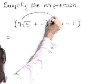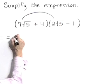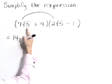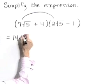7 root 5 times 2 root 5 is 7 times 2, or 14, times the square root of 5 times the square root of 5 is 5.